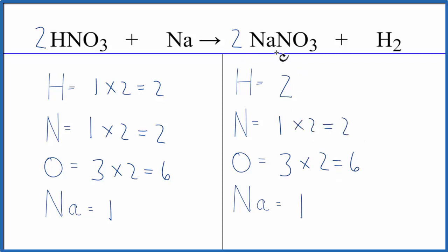And then sodium, one times two. That gives us two sodiums. That's pretty easy to fix, though. Sodium is by itself. So if I put a coefficient of two in front of the Na, one times two, that equals two.